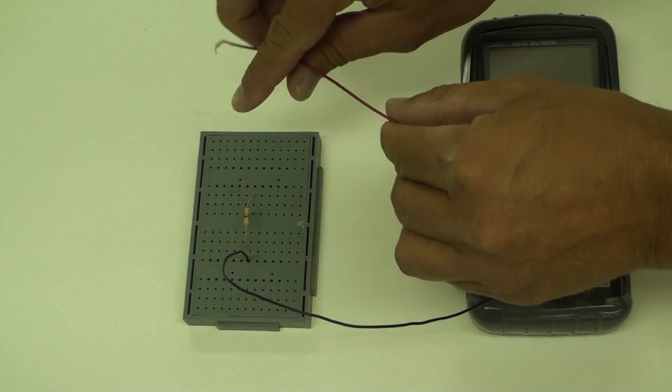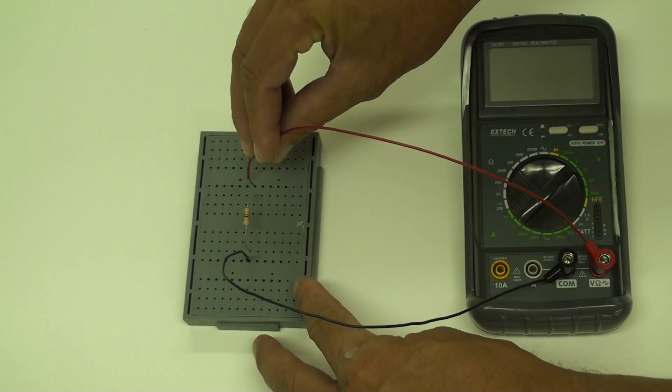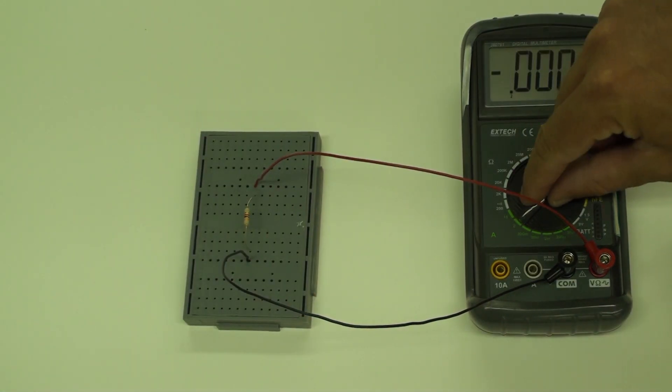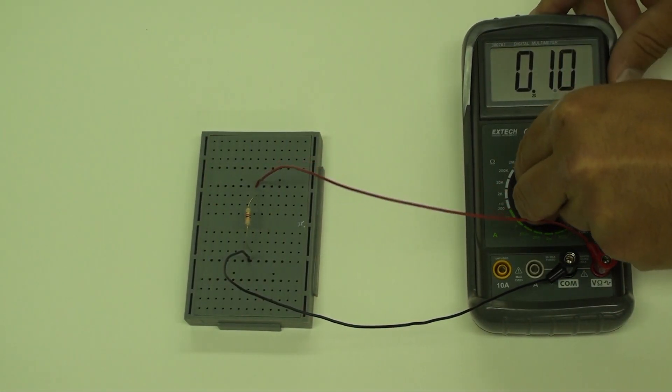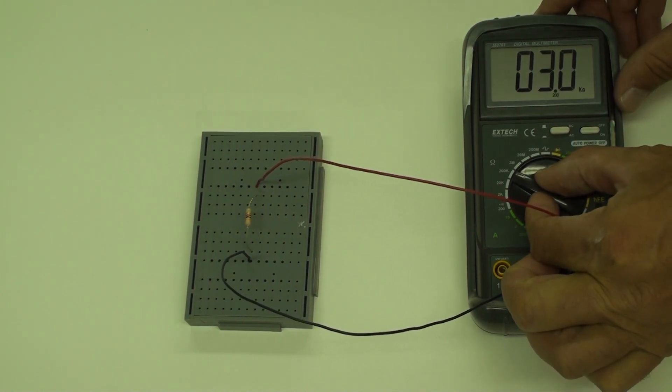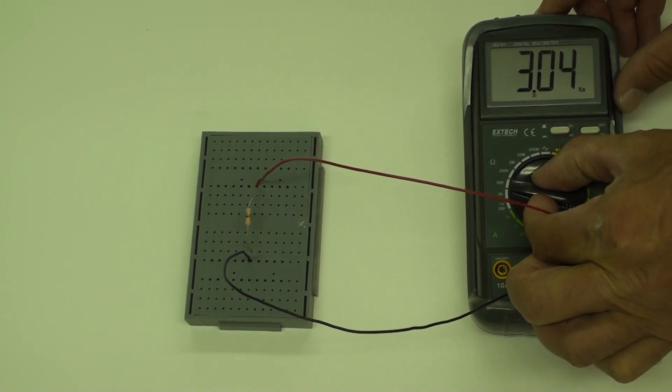Turn the multimeter dial to about 10 o'clock where it becomes an ohmmeter. The most accurate dial setting is the minimal setting that still allows a resistance reading. Compare the measured resistances with the labeled resistance indicated by the color bands.